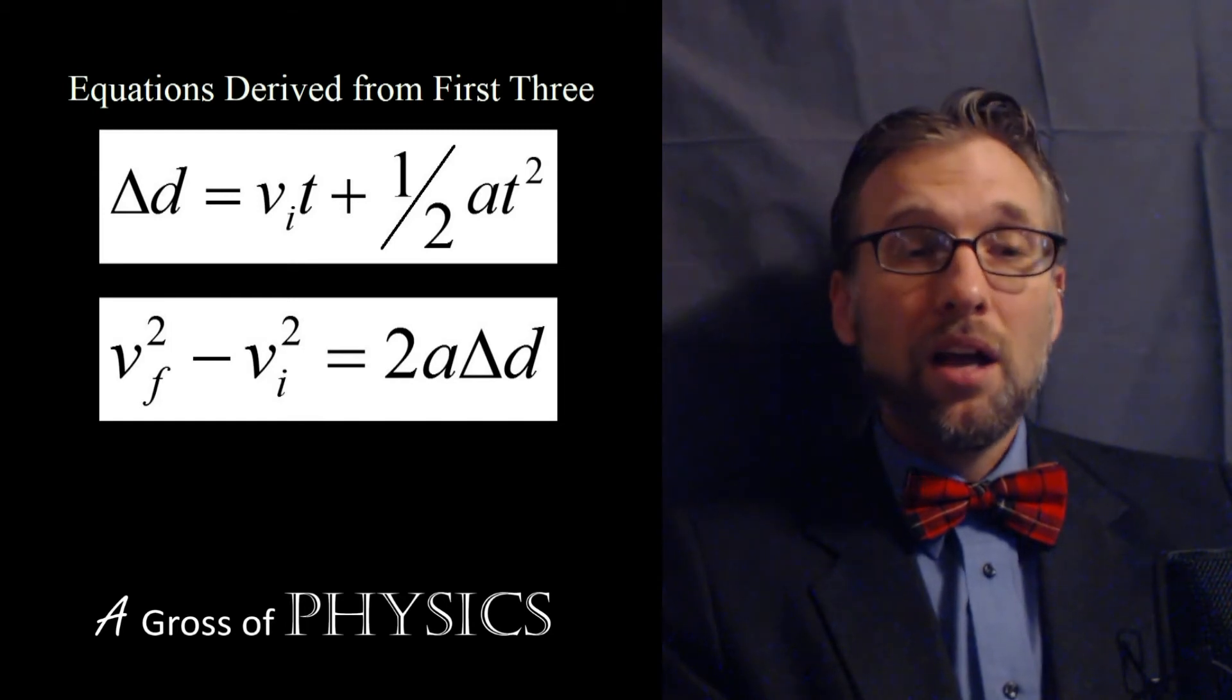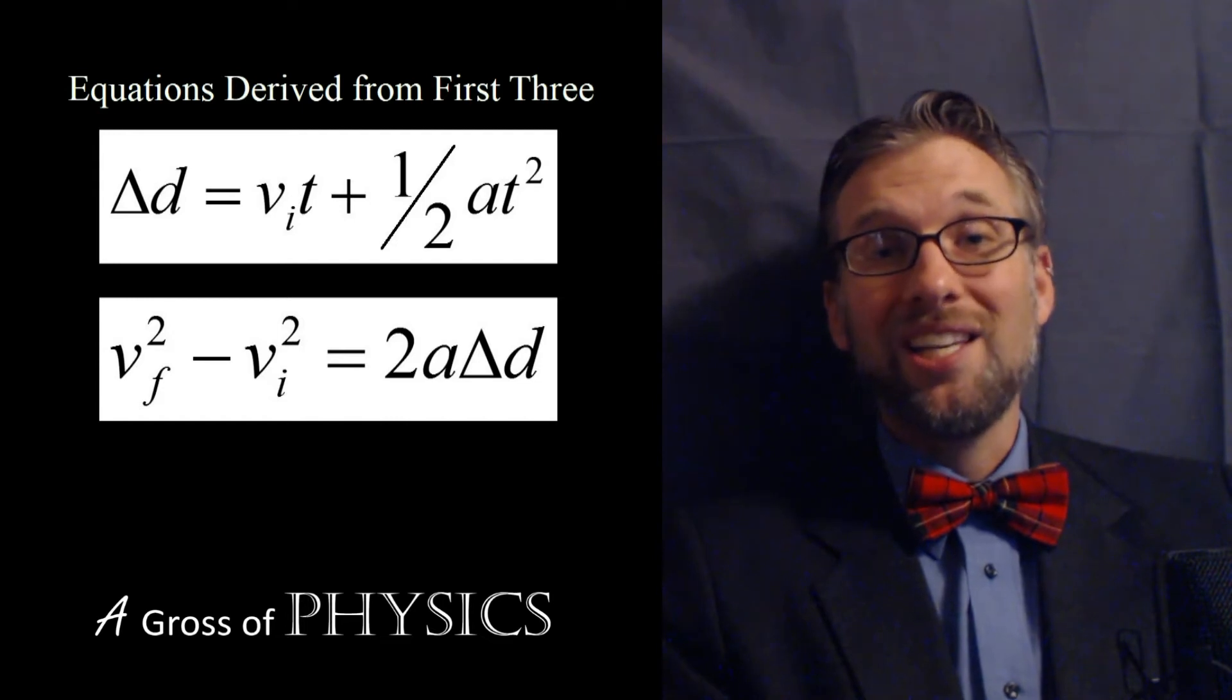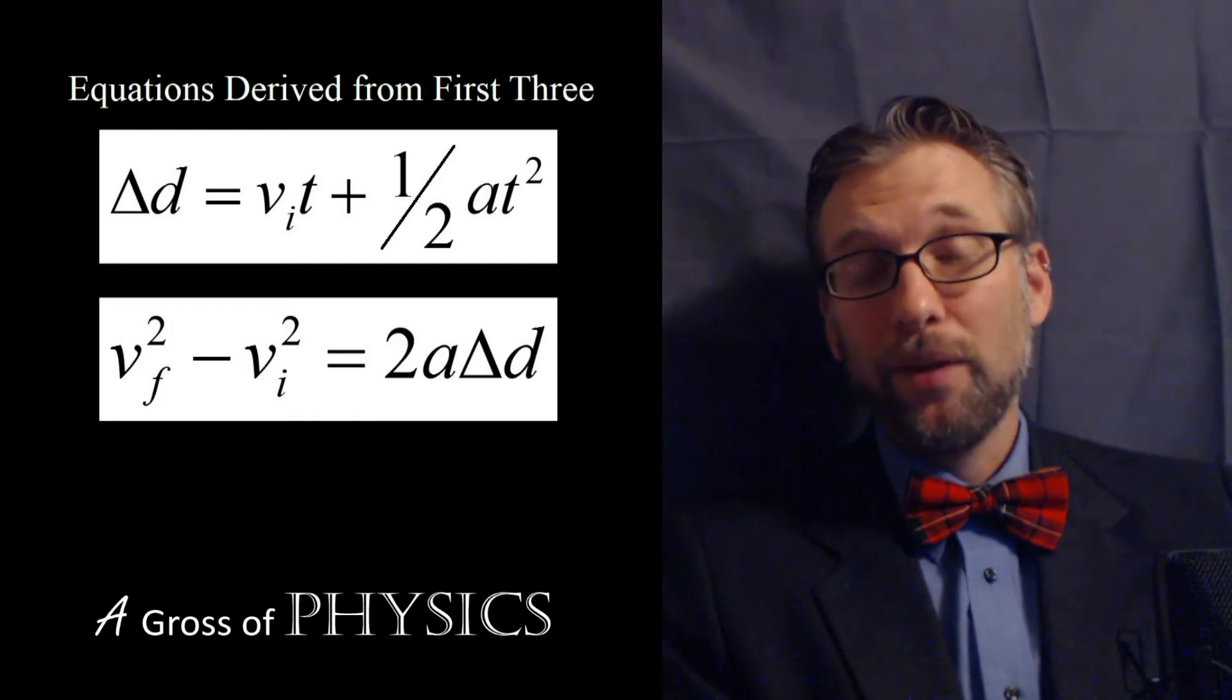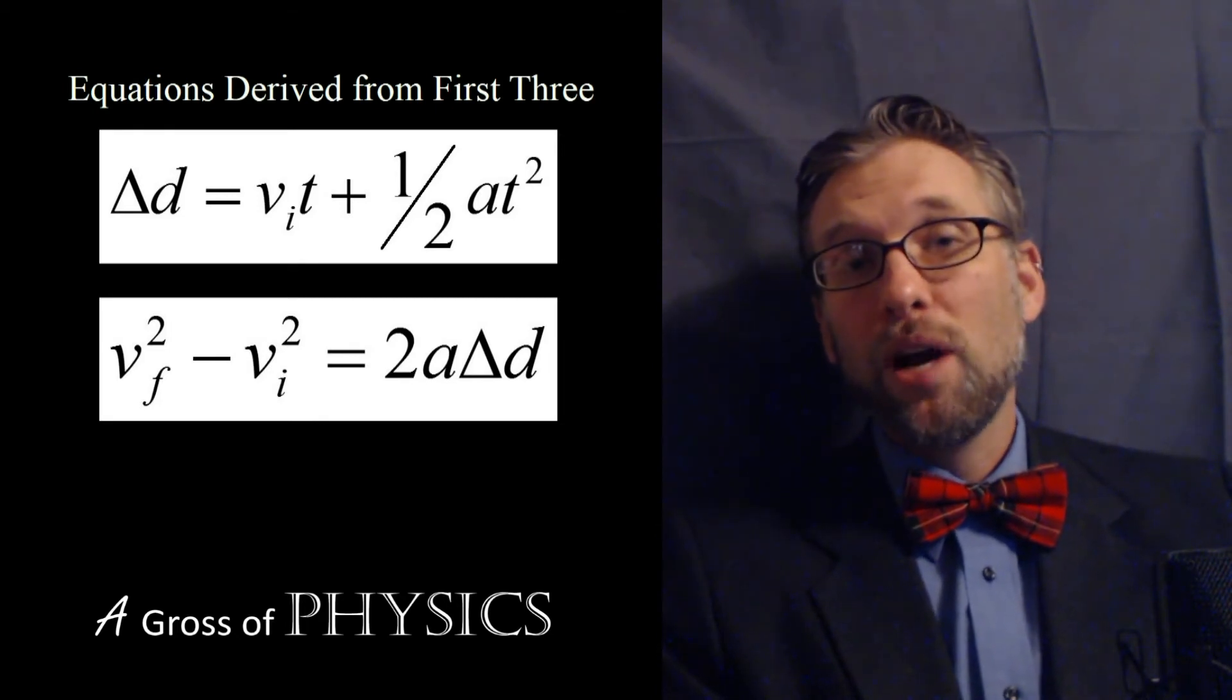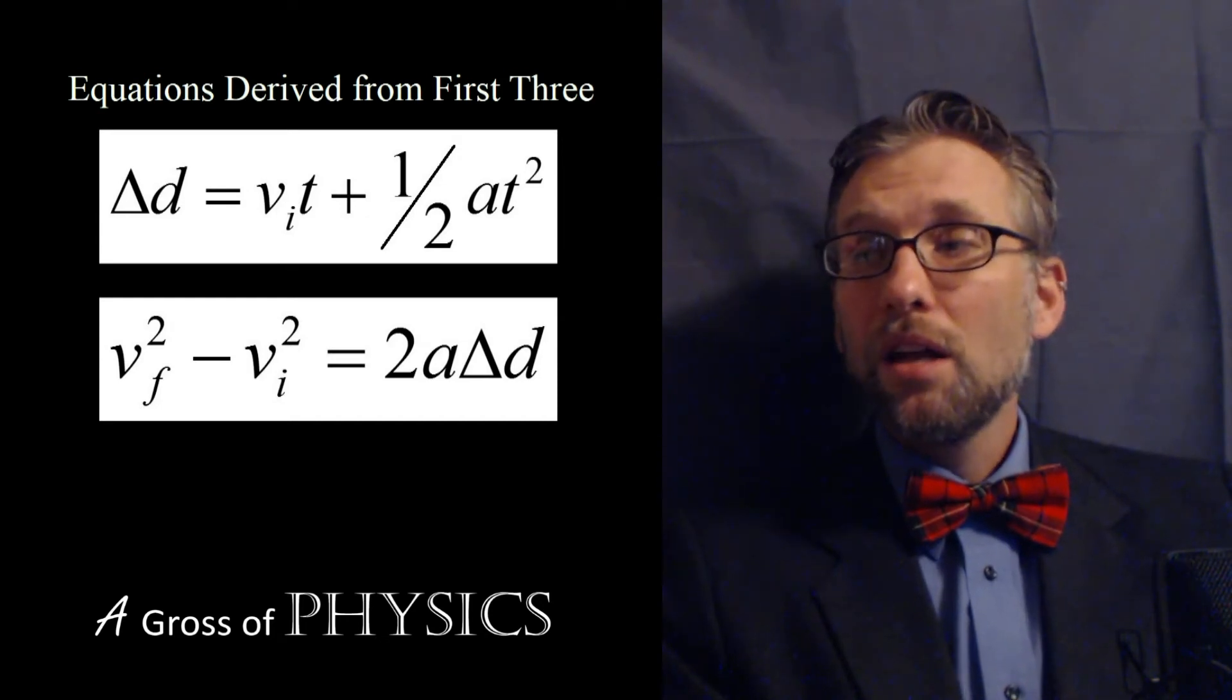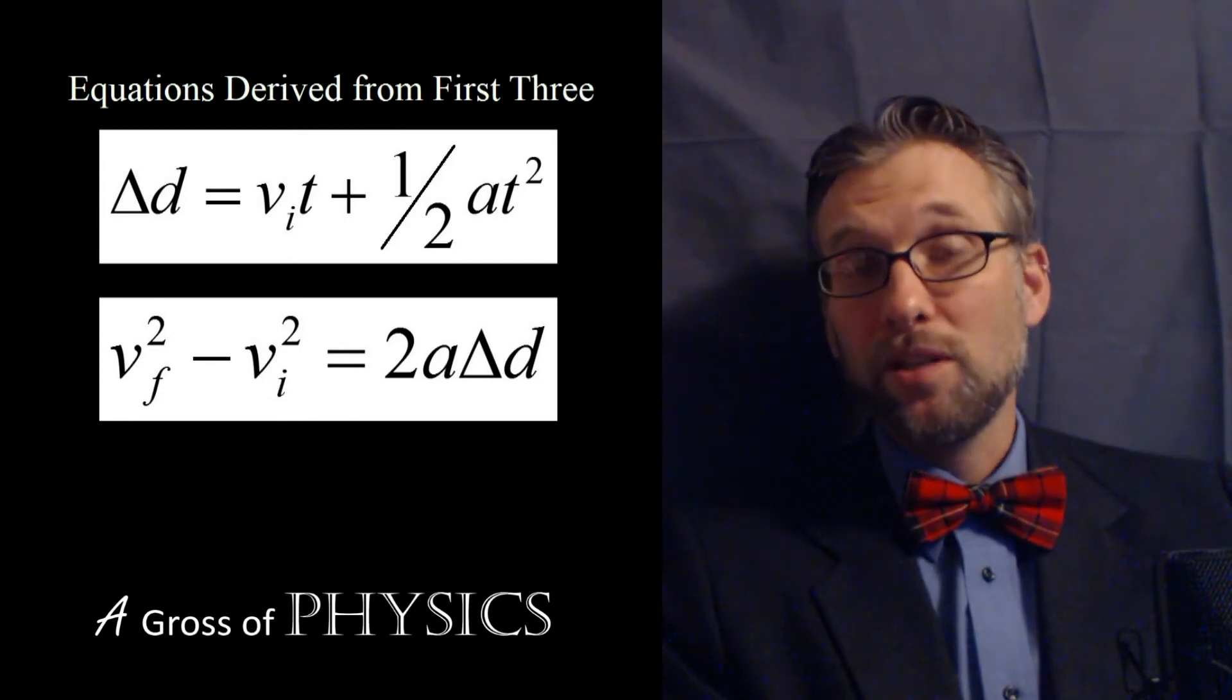If we combine equation four and three, we get equation five. Equation five is VF squared minus VI squared equals 2AD. That will allow us to solve any problem where time is not given. We could do most of these problems using equation one, two, and three in multiple steps, but as we add more steps we increase the likelihood of getting something wrong. I like to simplify the process by using the equation that gets the answer in as few steps as possible.